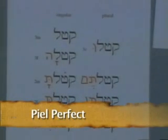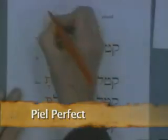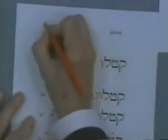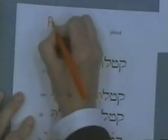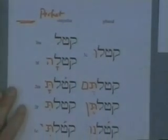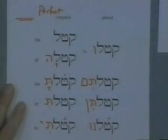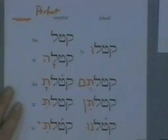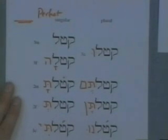All right, you know this as? Perfect. Now be careful — you were tempted to say this is the Qal perfect, and it could be. But now we just have to call it the perfect. You understand the point here?